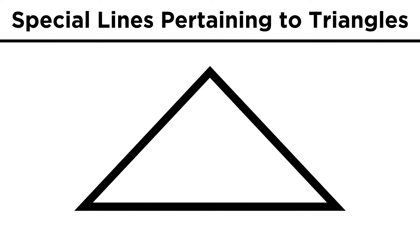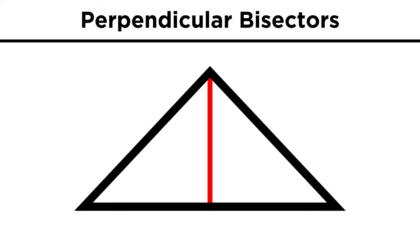Let's quickly identify some other lines that we can draw on triangles. One line we could draw is a perpendicular bisector. This is a line that is perpendicular to one of the sides of the triangle and cuts that side into two line segments of equal length. Any point on this bisector must be equidistant from the endpoints of these line segments.